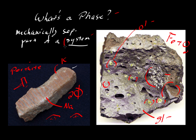And that takes us back to the issue of system. The system is what we are interested in. To sum up: the system is that part of the universe we're interested in, and depending on how you define that system, it will affect the number of phases you count. Phases are those parts of the system that we can separate by mechanical means — meaning we don't need chemical reactions to break apart and separate the materials.